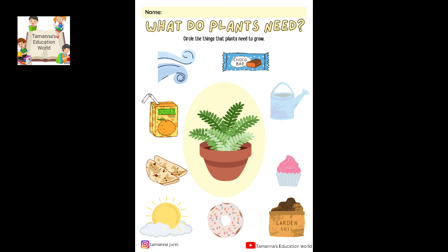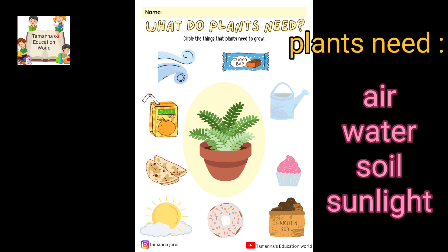So what do plants need to grow? First of all: soil, air, water, and sunlight.